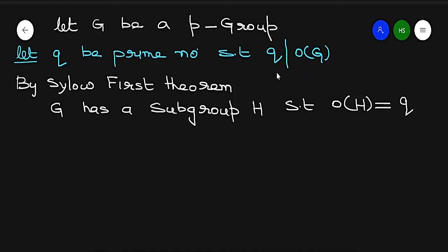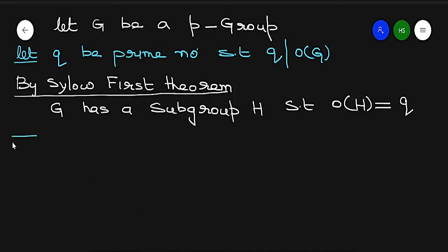By Sylow's first theorem, since q is a prime number dividing the order of G, there must exist a subgroup. We name that subgroup H. So order of H equals q. Since every group of prime order is cyclic, H is a cyclic group.